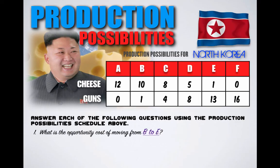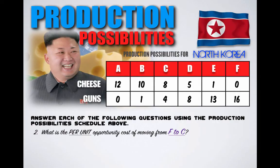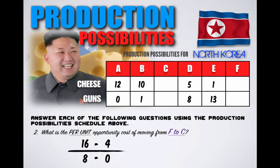Question 1: What is the opportunity cost of moving from combination B to combination E? It looks like the dear leader is going on another tantrum — he wants to increase gun production at the cost of cheese production. Shifting from combination B to combination E would have an opportunity cost of 9 units of cheese. Question 2: What is the per-unit opportunity cost of moving from combination F to combination C? Kim Jong-un now wants more cheese at the expense of gun production. North Korea increases cheese production from 0 to 8 units and decreases gun production from 16 to 4 units. The per-unit opportunity cost is 12 over 8, meaning per unit of cheese produced, the opportunity cost is one and a half guns.